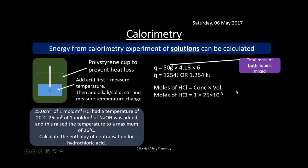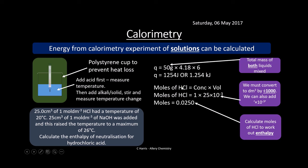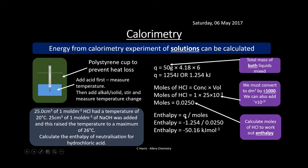It's very important that both liquids are used for the mass. Then we work out the moles of HCl: moles equals concentration times volume — concentration is 1, volume is 25 × 10⁻³ (converting cm³ to dm³, the same as dividing by 1000) — giving 0.0250 moles. Enthalpy is energy divided by moles. This is exothermic because the temperature increased, so minus 1.254 divided by 0.0250 gives an enthalpy change of minus 50.16 kilojoules per mole. Don't forget to take the mass of both liquids.